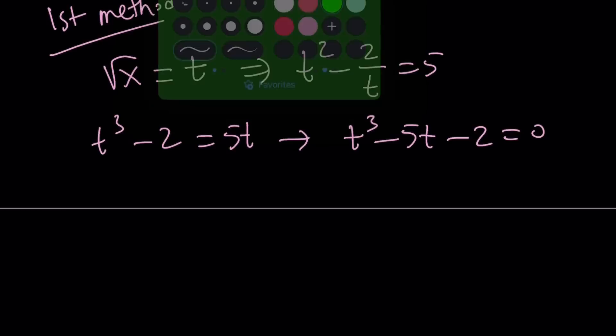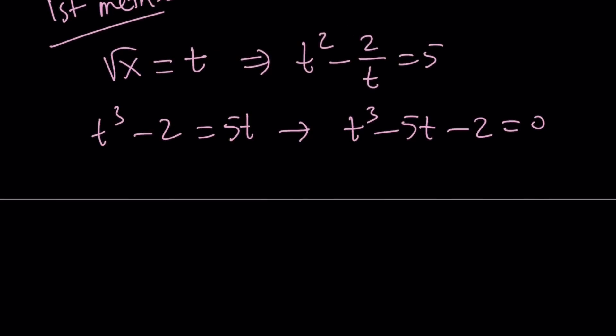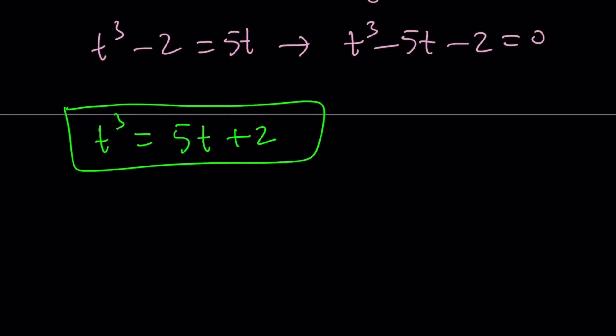So the first method proceeds as follows. We're going to isolate t cubed and write it as 5t plus 2. So we're going to take advantage of polynomials here, polynomial powers. I was able to write t cubed as this. So what am I looking for? What am I trying to find?